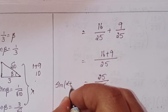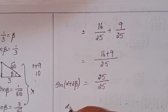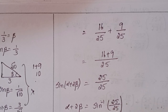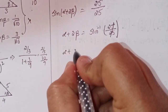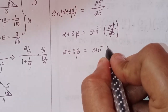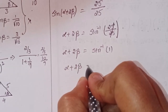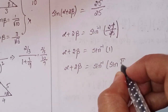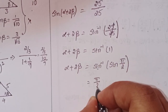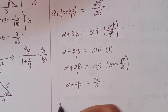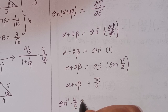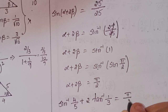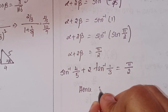So sin(α + 2β) = 25/25 = 1. Therefore α + 2β = sin⁻¹(1) = sin⁻¹(sin 90°) = π/2. Substituting back: sin⁻¹(4/5) + 2·tan⁻¹(1/3) = π/2. Hence it is proved.